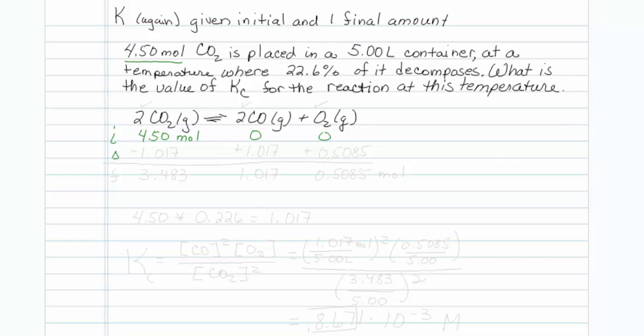I'm told that 22.6 percent of it decomposes. So I'll take 4.50 and multiply it by 0.226 to find out what that amount is. It turns out that it's 1.017. This is the amount that decomposes, so this is what goes on my delta row, minus 1.017.